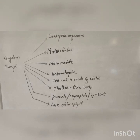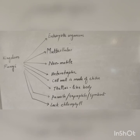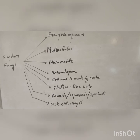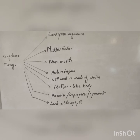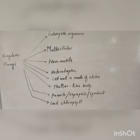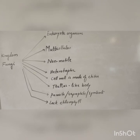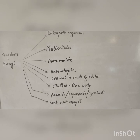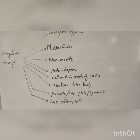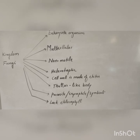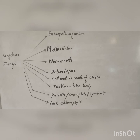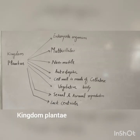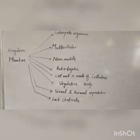Fungi have a thallus-like body, meaning their body cannot be differentiated into stem, root, and leaves. Their body is made up of mycelium, which may be septate or non-septate. They may be parasites, saprophytes, or symbionts. Fungi lack chlorophyll.